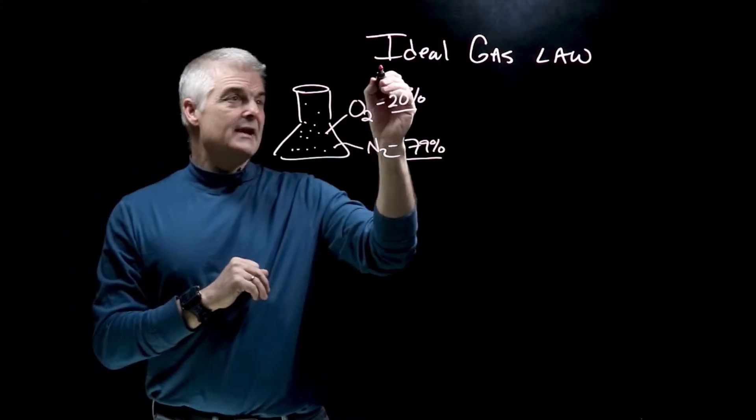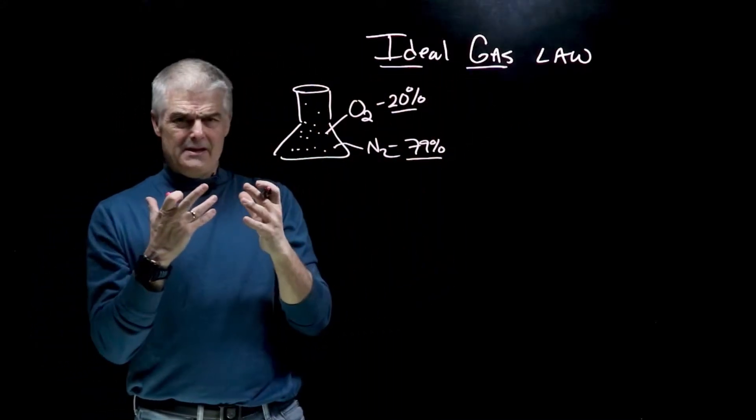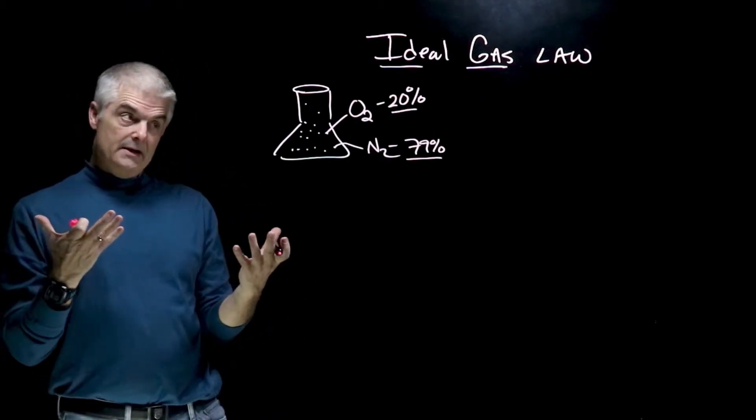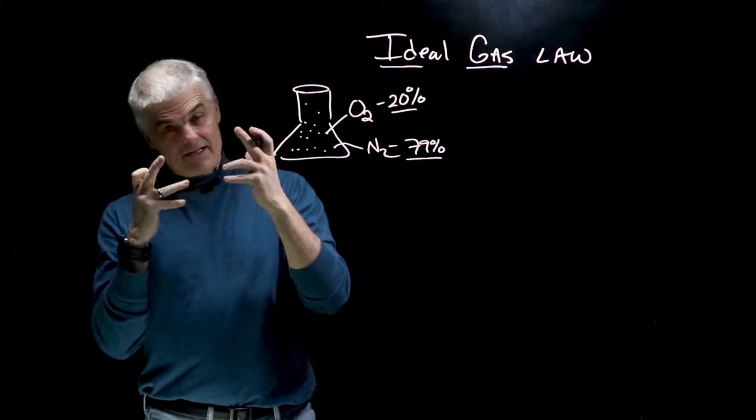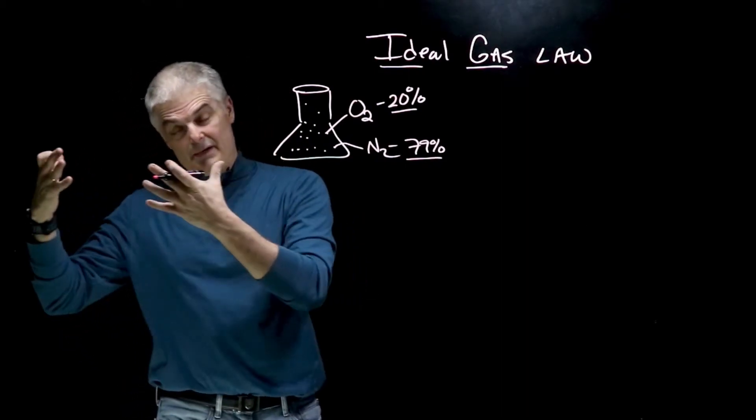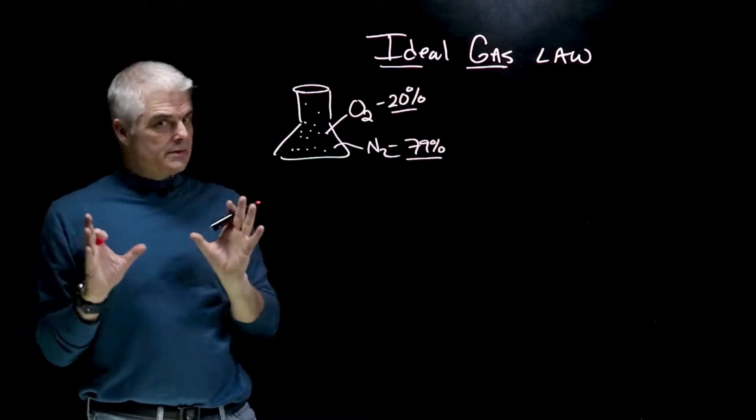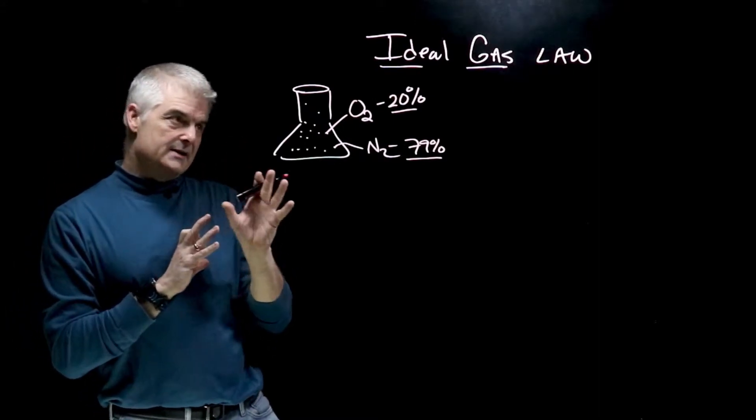Now let's talk about this idea of an ideal gas. What does that mean? Ideal. What's ideal? Ideal would be like something that's perfect, right? Well the ideal gas is actually something that doesn't really exist. We actually can talk about real gases and ideal gases. So we make two big assumptions about an ideal gas.